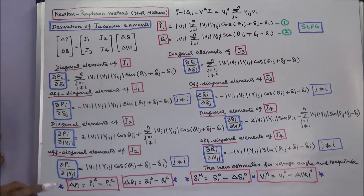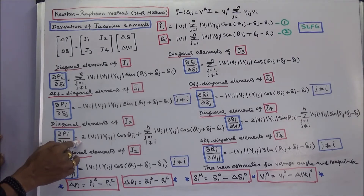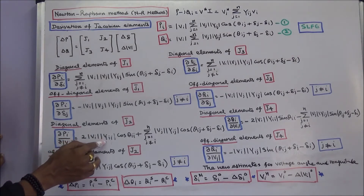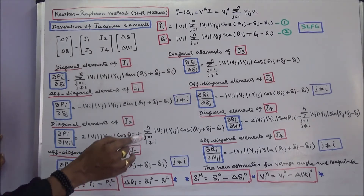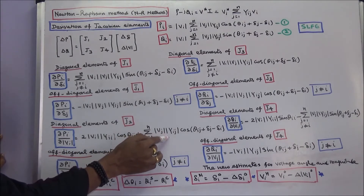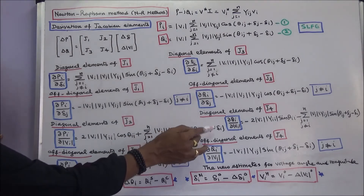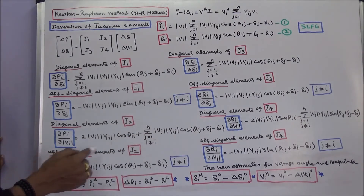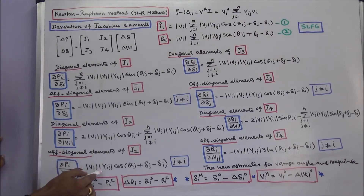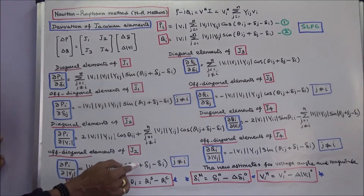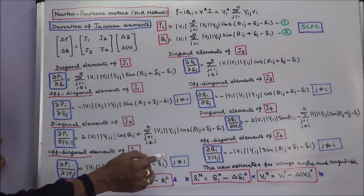Diagonal elements of J2: ∂Pi/∂|Vi| is equal to 2|Vi||Yii| cos(θii) plus sigma (j=1 to n, j≠i) |Vj||Yij| cos(θij + δj − δi). Off-diagonal elements of J2: ∂Pi/∂|Vj| is equal to |Vi||Yij| cos(θij + δj − δi), for j not equal to i.